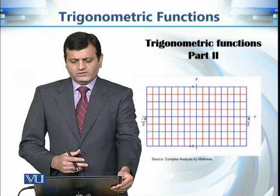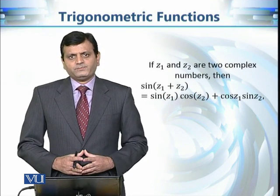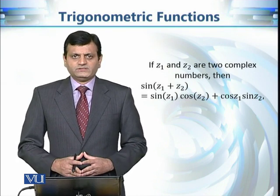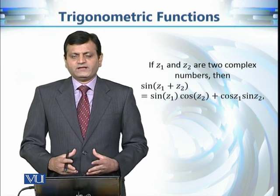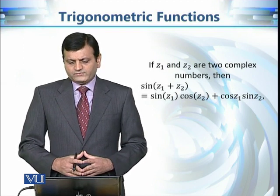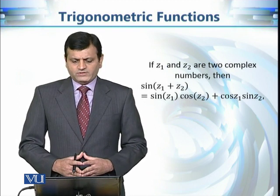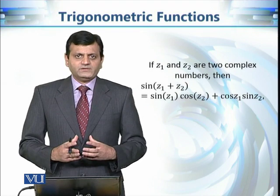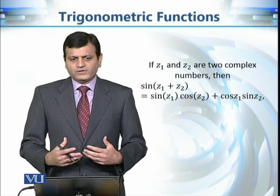Now we are going to continue and see further properties of these complex trigonometric functions. One famous property is the addition formula: sin(x₁ + x₂) = sin(x₁)cos(x₂) + cos(x₁)sin(x₂). In the complex case, if we replace x₁ and x₂ with complex variables z₁ and z₂, the identity becomes sin(z₁ + z₂) = sin(z₁)cos(z₂) + cos(z₁)sin(z₂) — with no change in sign.